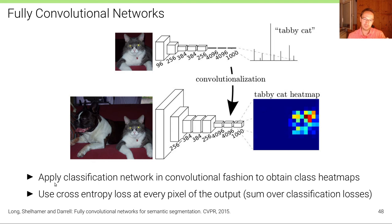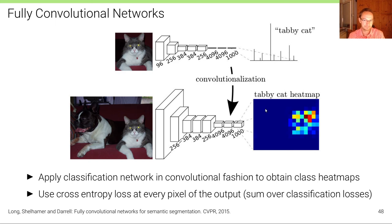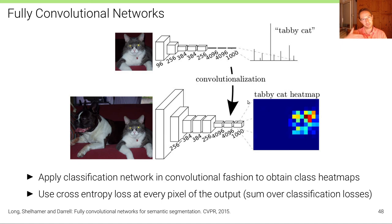They call this 'convolutionalization' in the paper. We apply a classification network in a convolutional fashion to obtain class heat maps — one per category. Training is the same as a classification network, except now we use a cross-entropy loss at every pixel of the output heat maps, summing over all classification losses — one for each pixel in this stack of heat maps.